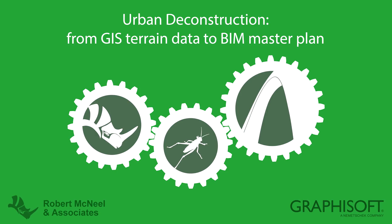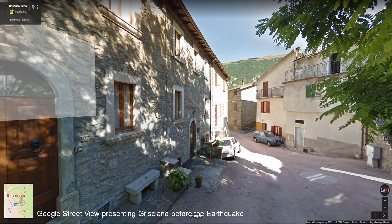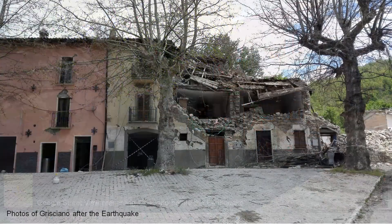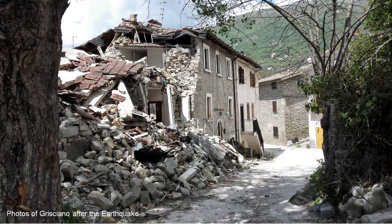This movie presents a real-life workflow scenario using the ARCHICAD Grasshopper Live connection tool. A series of earthquakes destroyed the historic center of Grisciano, a small town in the center of Italy, in August 2016. The town municipalities needed a solution to acquire the digital models of those buildings that were destroyed during these seismic events.